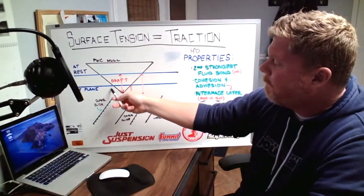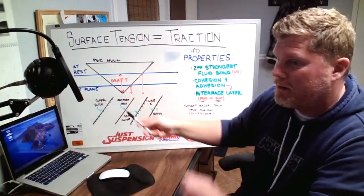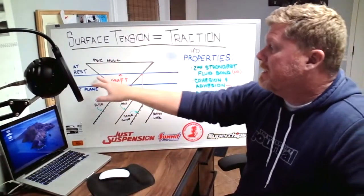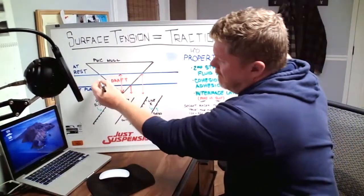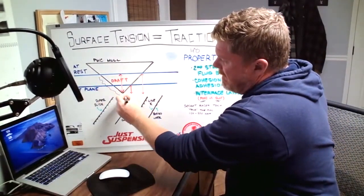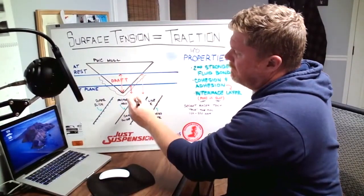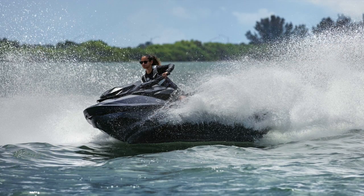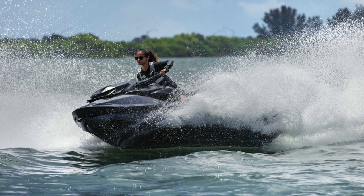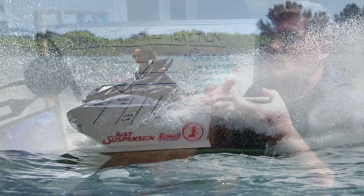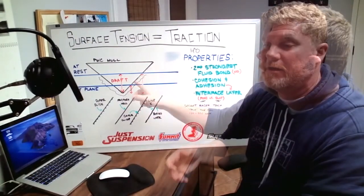At plane, you got this very little amount of hull in the water. Surface tension means that all of this area, all of this area while you're in motion, is dragging. It's trying to slow it down.